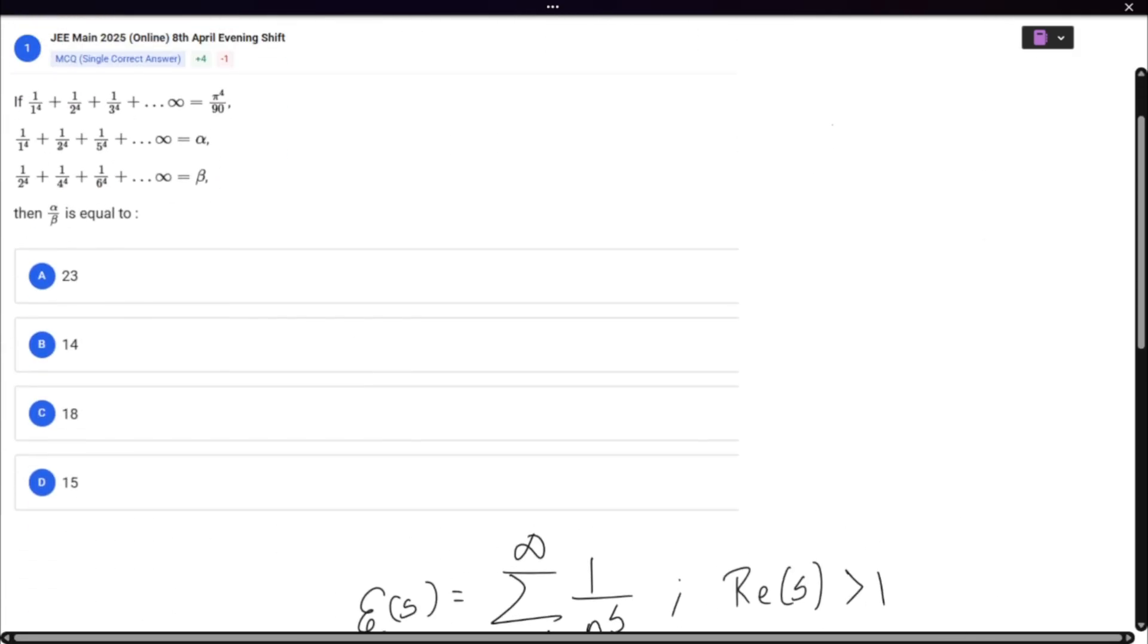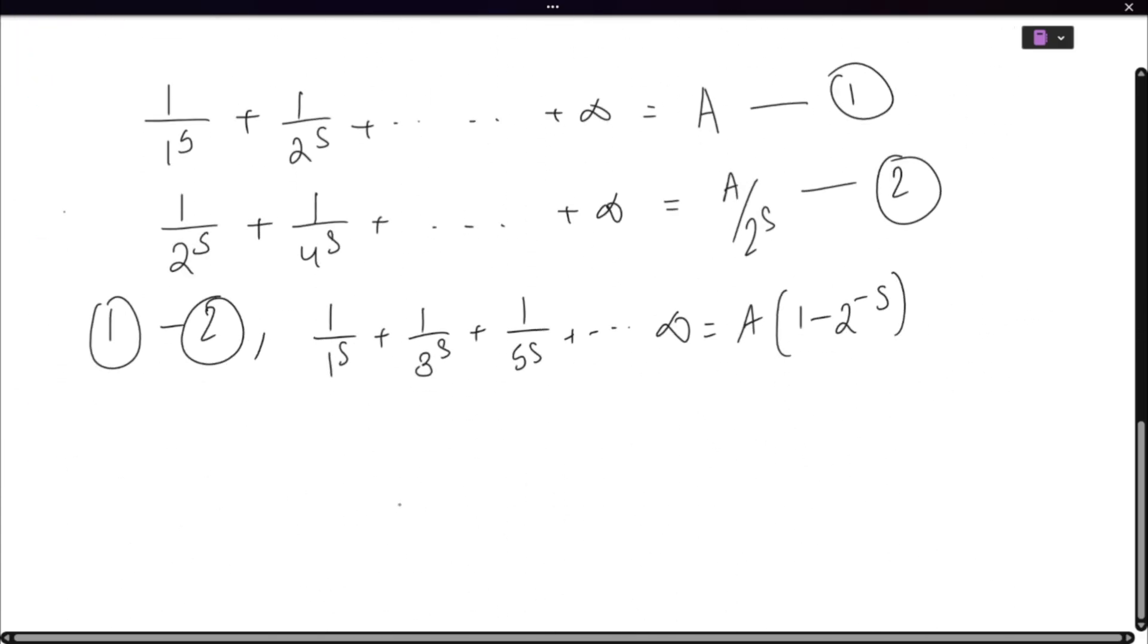Therefore, if we go here, we know that alpha is the odd one, and beta is the even one. So alpha is the odd one and beta is the even one.